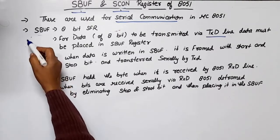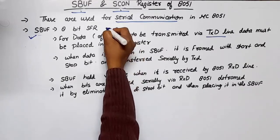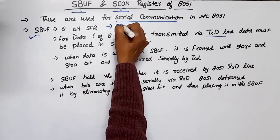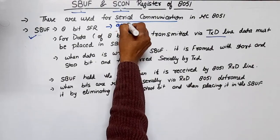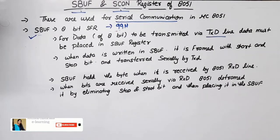Let's first discuss the Serial Buffer Register. This is an 8-bit special function register and its RAM address is 99H. This register holds whatever data we want to transmit or receive — that data is stored in the serial buffer.